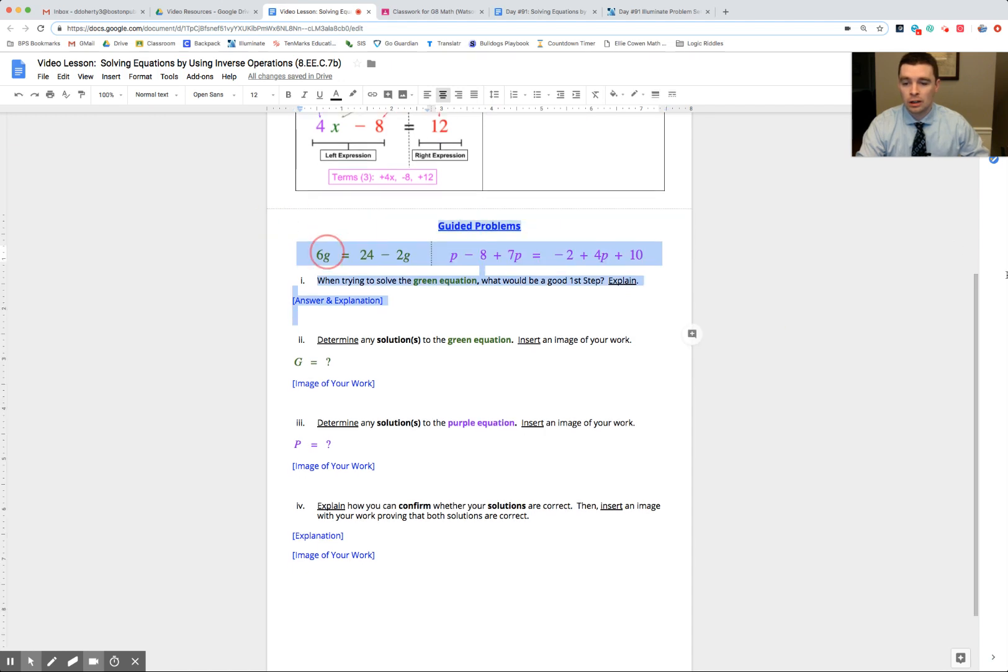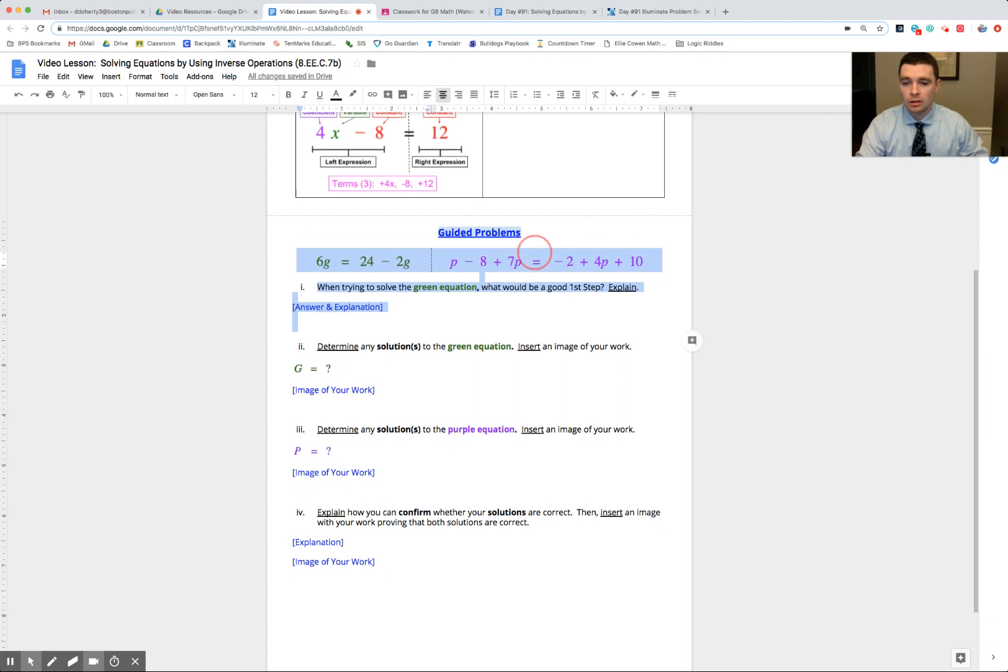Two examples today. The green equation, a little simpler: 6g equals 24 minus 2g. And then we're going to turn to the purple equation where we see a whole bunch more terms that make it more complicated. First thing you're going to think about when you're trying to solve this green equation: what would be a good first step? I'm going to show you my whiteboard for a second. I want to point out a few things before you're pausing the video. As we take a look at the whiteboard and the equation here, first thing you should be taking note: how many terms we have here.